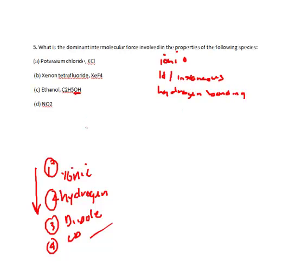The next is NO2. Is it ionic? No, it is not ionic. Does it have hydrogen bonding? No, there's no hydrogen. So we look at the dipole, and this actually does have a dipole moment, and therefore it's dipole-dipole interaction.